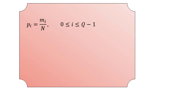A measure of coding redundancy is given by the average number of bits needed to represent each sample of signal x(n). This is denoted B_av (average), equal to the summation for i = 0 to Q−1 of the product b_i × p_i. As a result, the total number of bits required to represent the signal is N × B_av.